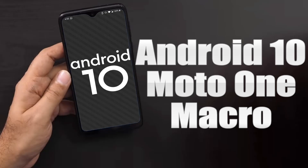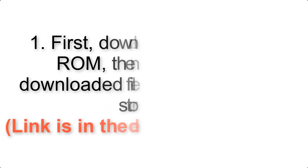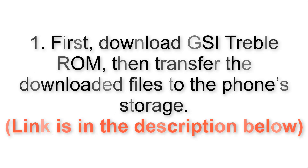Install Android 10 on Motorola One Macro via AOSP GSI treble ROM. Please check the description for important notes and all the download links. First, download the ROM and GApps packages, then transfer the downloaded files to the phone storage. The link is in the description below.